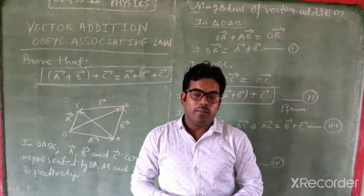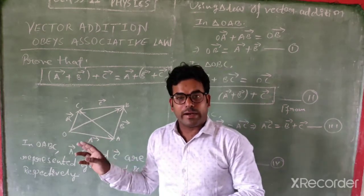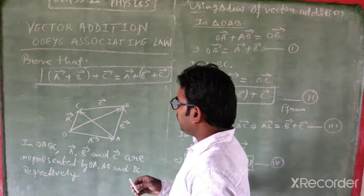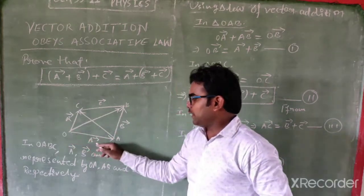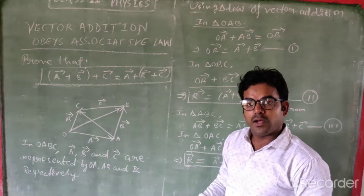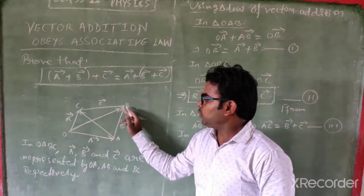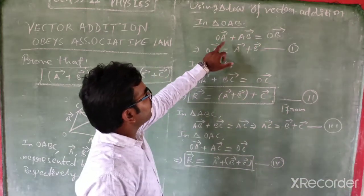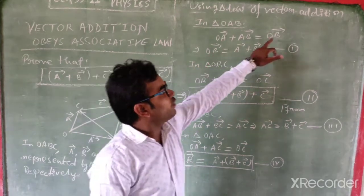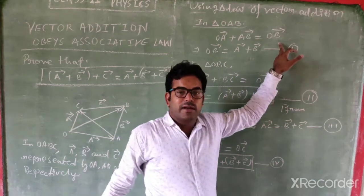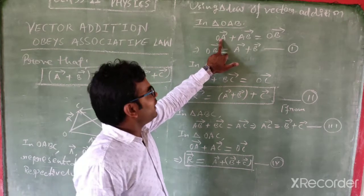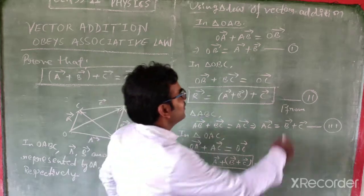In triangle OAB, vector A is represented by OA and vector B is represented by AB. So, vector A plus vector B is equal to vector OB. That means vector OA plus vector AB is equal to vector OB. Vector OB does not represent any named vector directly — vector OA equals vector A and vector AB equals vector B. This is equation number one.